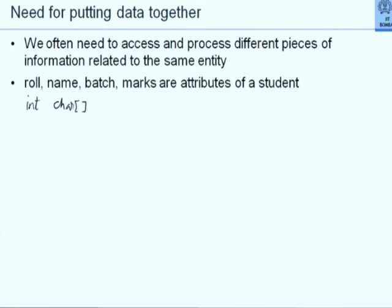A lab batch, as we know it, is again another int type value. Marks — should it be an int? Float. You don't want to lose 0.5 marks that you gain, right? So marks should be float.